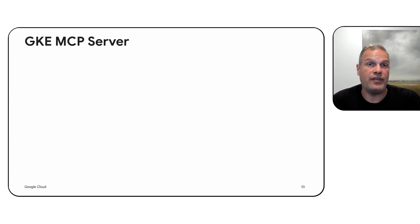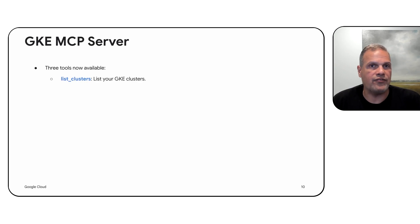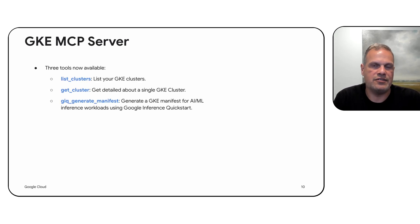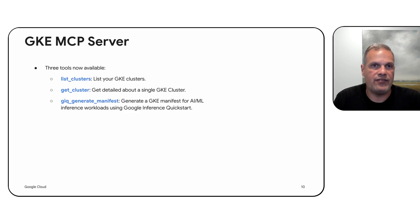The GKE MCP server supports three functions right now, but we'll add a few more tools later. We can easily list all the clusters in your project, get specific information on your clusters, and we even have an API to generate manifests for inference workloads — for example, how do I run Llama on VLLM, and it'll generate you that manifest.